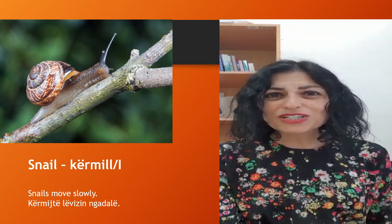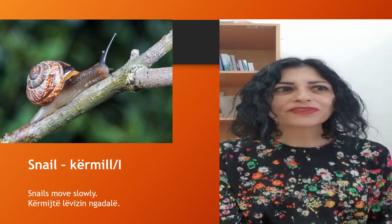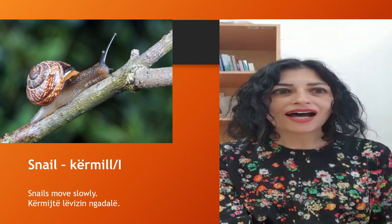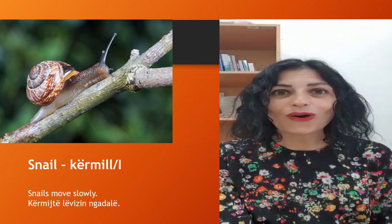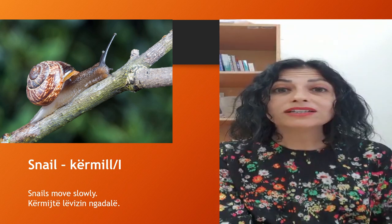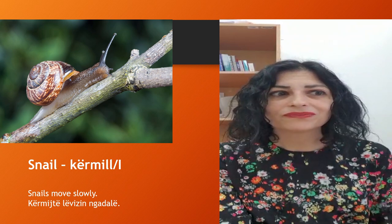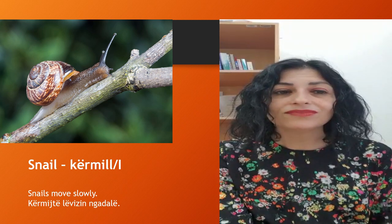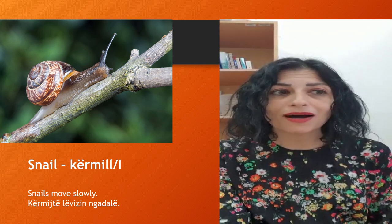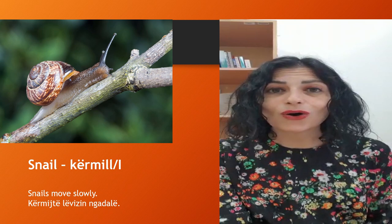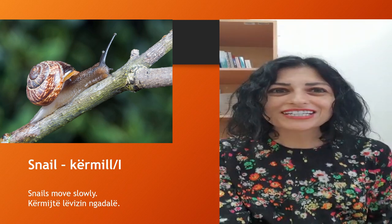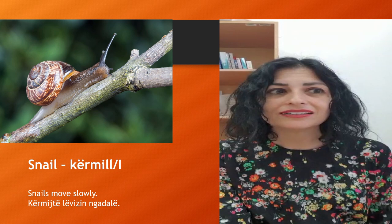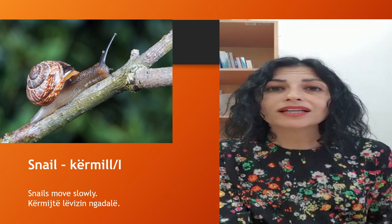Alright, so these were the insects I chose for you. Let's repeat them. First we have the bee: bletë, bleta. Then the ant: milingon, milingona. Next, butterfly: flutur, flutura. Then the fly: mizë, miza. The spider: merimang, merimanga. The mosquito: mëshkonjë, mëshkonjë. The worm: kërmbë, kërmbi. And the last one, the snail: kërmillë, kërmilli.